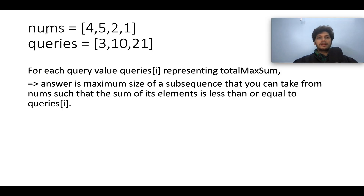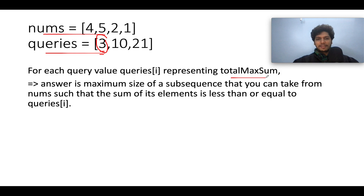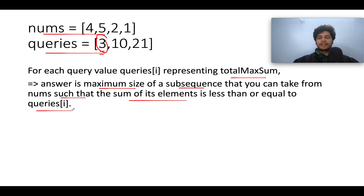Here in this question you are given a nums array and a queries array, and for each query value given to you, you need to identify the answer. This query value basically represents the total max sum, and the answer would be the maximum size of a subsequence you can take from the nums array such that the sum of its elements is less than or equal to the query value at the ith index — that means the total max allowed sum.